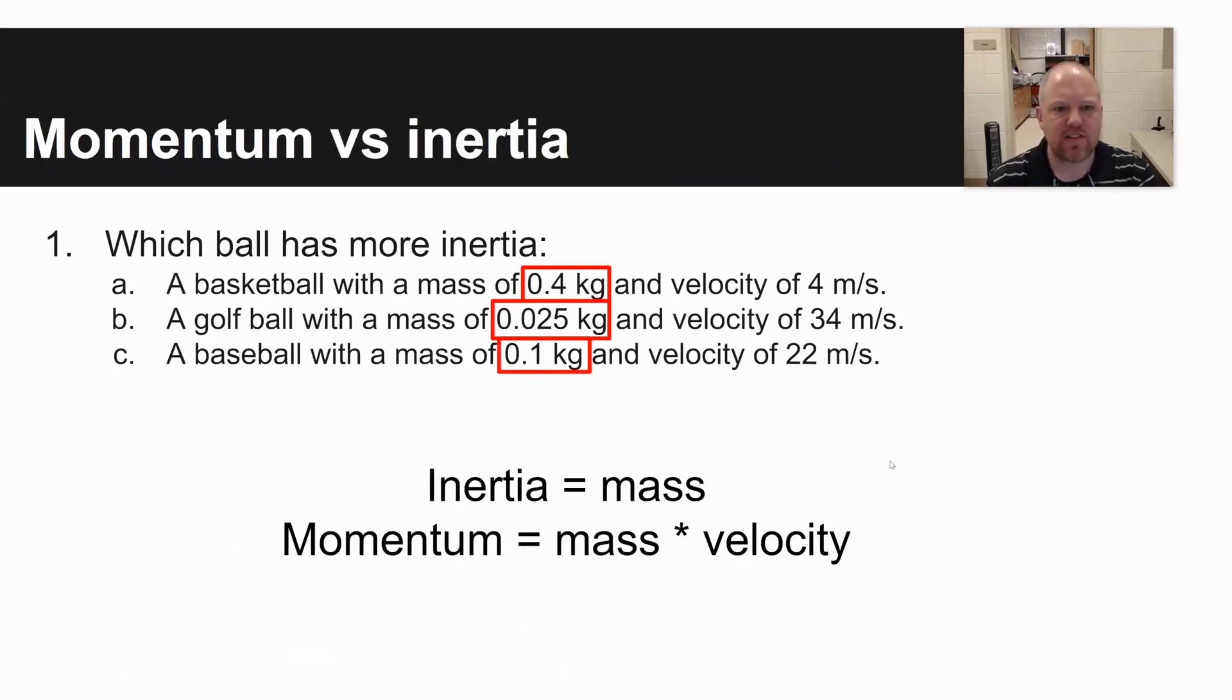First question has to do with momentum versus inertia. So momentum is mass times velocity. Inertia just has to do with an object's mass. And so which ball has more inertia: a basketball with a mass of 0.4 kilograms and velocity of 4 meters per second, a golf ball with a mass of 0.025 kilograms and velocity of 34 meters per second, or a baseball with a mass of 0.1 kilograms and velocity of 22 meters per second?